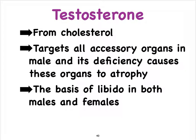We learned in the previous video that testosterone is needed for spermatogenesis, but testosterone actually targets the accessory sex glands in the male as well. So when testosterone levels are low we're going to see that the prostate, the seminal vesicles, and even the testicles themselves are going to start atrophying.